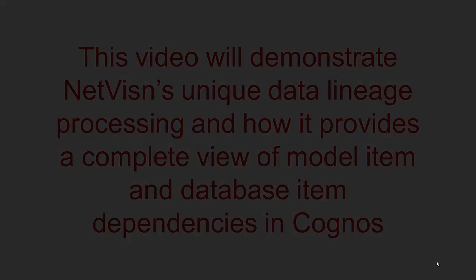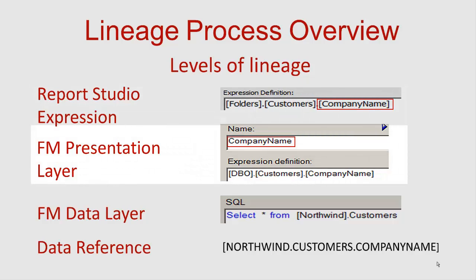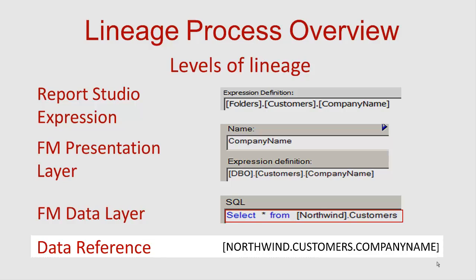To help understand lineage, let's take a look at a simple example. In Report Studio, an item is placed on the report which references the Folders, Customers, Company Name query item in Framework Manager at the presentation level. That item in turn references the DBO Customers, Company Name query item and another query subject at the data layer in the model. The query subject is sourced from the SQL statement. From information in the model, it is possible to determine the Cognos data source along with the database table and column which is being used for this query item.